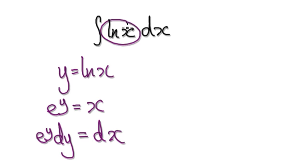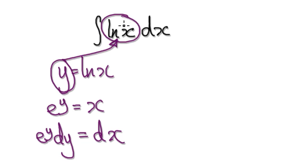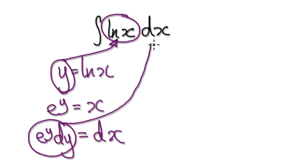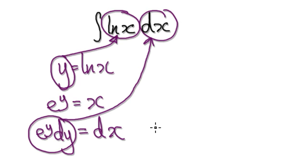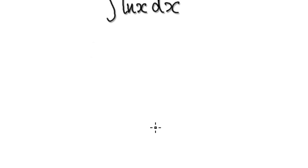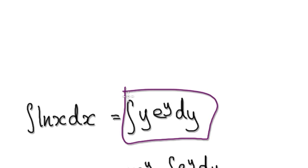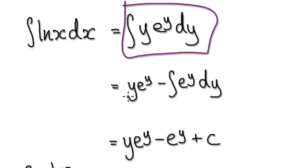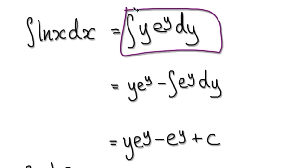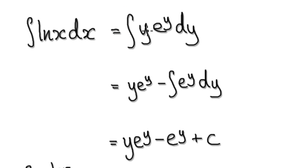Don't forget this natural log of x part is y, so we can substitute that in. We put the dx expression into the integral — the dx part becomes e to the y dy — and that gives us the integral of y times e to the y dy. Now all we need to do is integrate this using integration by parts. Let y be u and e to the y be v prime.